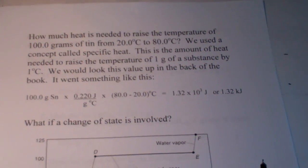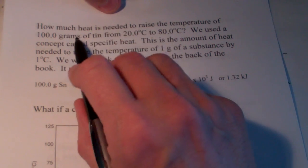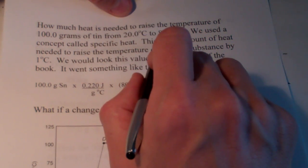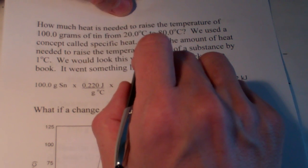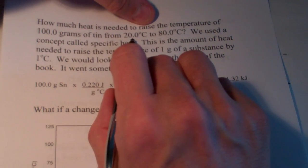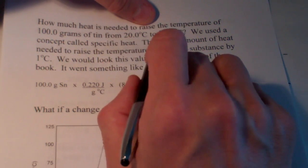So, let's take a look at a couple of problems here. The first one, how much heat is needed to raise the temperature of 100 grams of tin from 20 to 80 Celsius? Now, there's no phase change here. We're simply taking the metal from 20, a little bit below room temperature, to 80 Celsius.